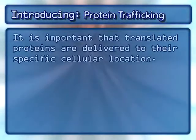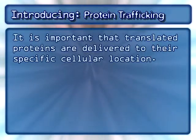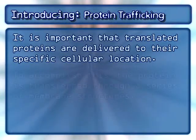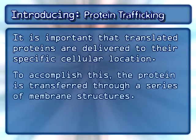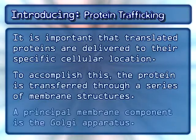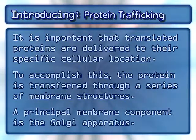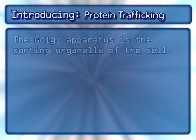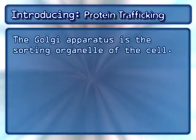It is important that translated proteins are delivered to their specific cellular location. To accomplish this, the protein is transferred through a series of membrane structures. A principal membrane component is the Golgi apparatus, which is the sorting organelle of the cell.